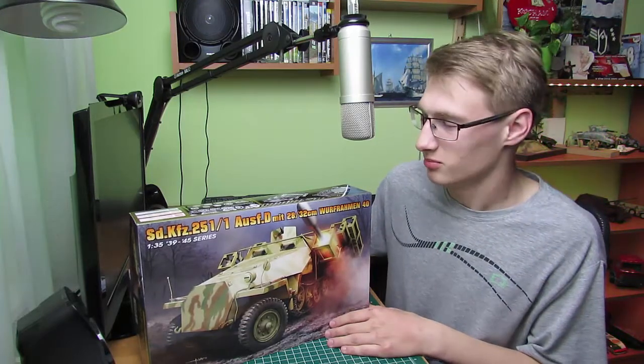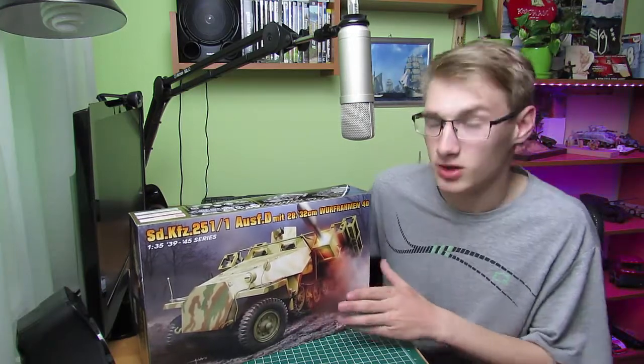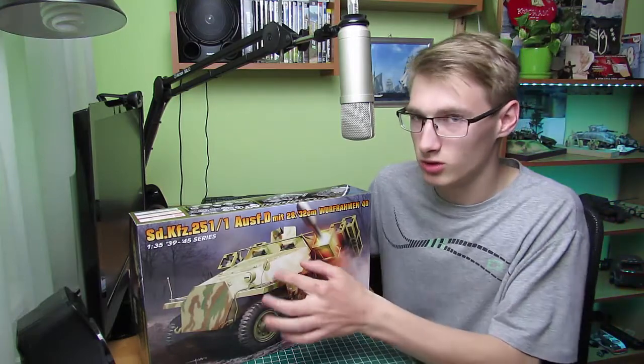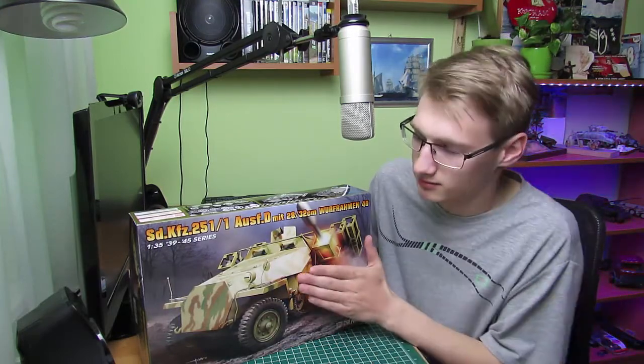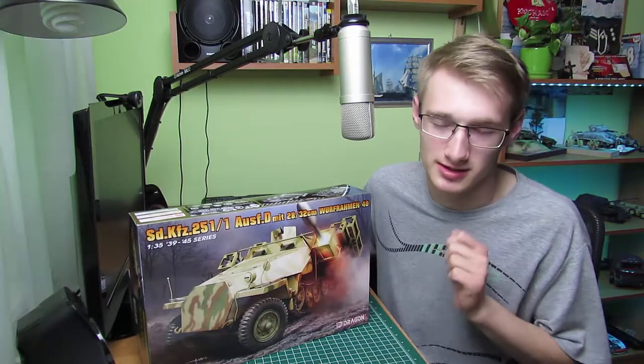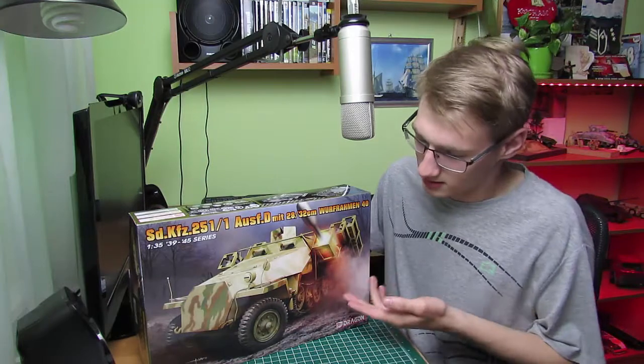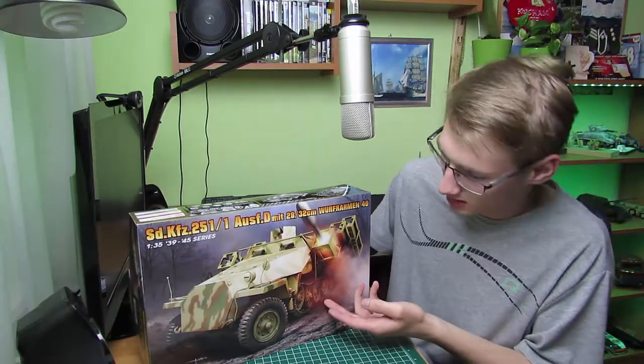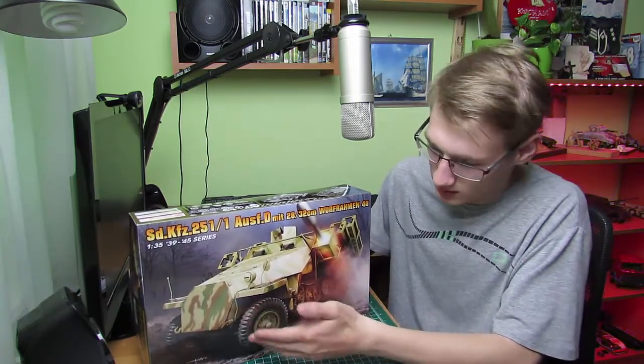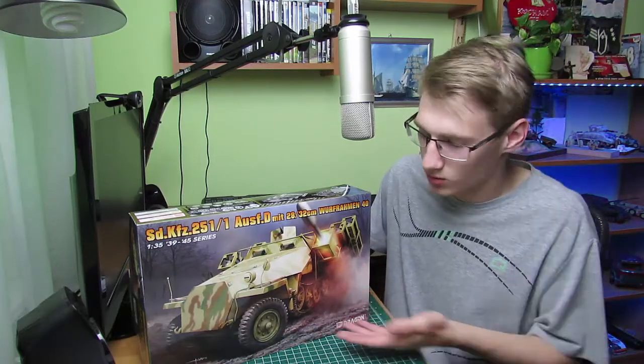Miałem okazję jechać Sd.Kfz. 251, nie pamiętam tylko jaka to była dokładnie wersja, ale naprawdę imponująco wygląda w środku wyposażenie. Nawet ten charkot gąsienic jest zdumiewający. Jest to pojazd oparty na hybrydzie - przednie koła ma zwykłe opony, a tylnie zastąpione gąsienicą, czyli półgąsienicowy.